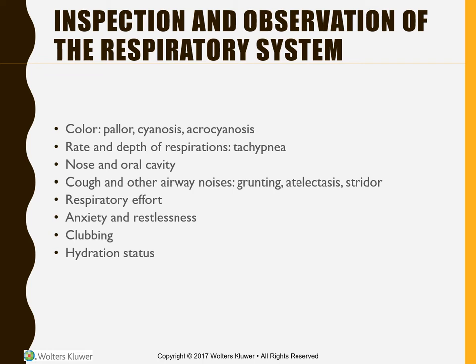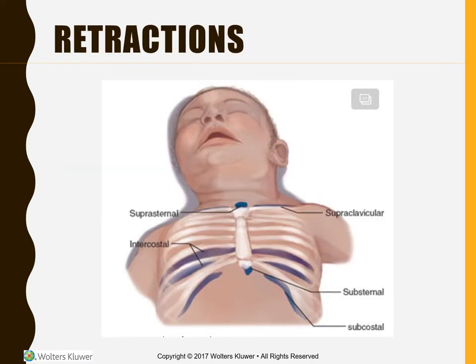When you hear the word accessory muscles, you should automatically think about retractions — that inward pulling of soft tissue with respirations. You can see retractions subcostally, substernally, intercostally, suprasternally, supraclavicularly, and even as high as nasal flaring. We want to document not only where we're seeing the retractions but also the severity: mild, moderate, or severe.